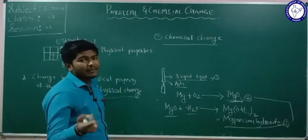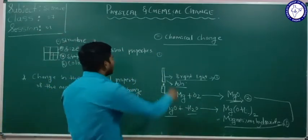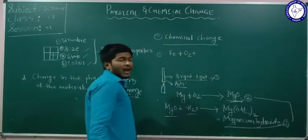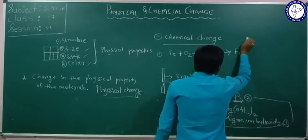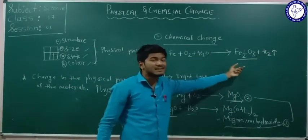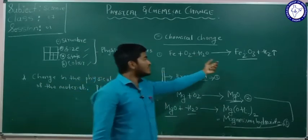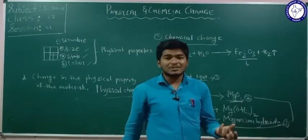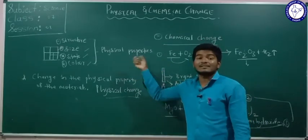Another example is rusting of iron. Iron — that is ferrous — reacts with the oxygen and water present in the air and forms Fe₂O₃, which is known as rust. When the ferrous reacts with oxygen and water, rust is formed — a new compound is produced. In any reaction, if we get different components, if new compounds are formed, then that reaction is called a chemical reaction.